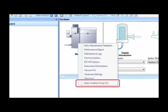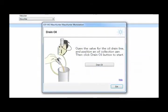From the Hardware menu in MassHunter, click Mainframe and select Drain for Line Pump Oil from the drop-down menu. The Drain Oil wizard screen appears.